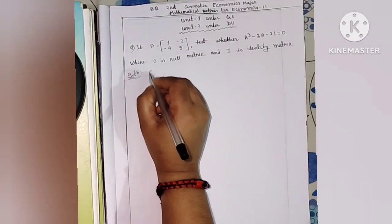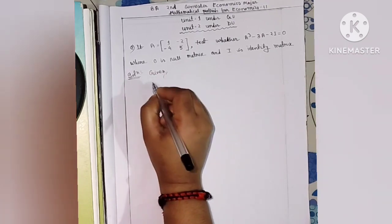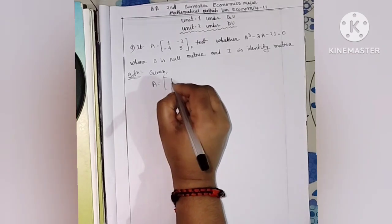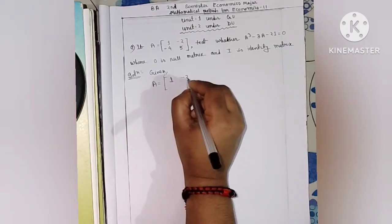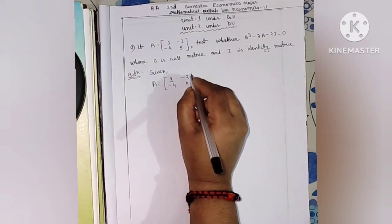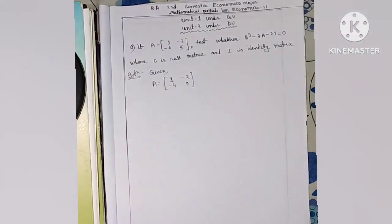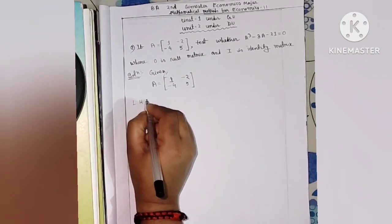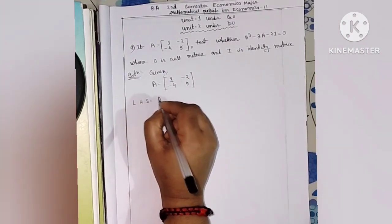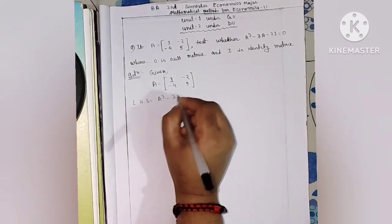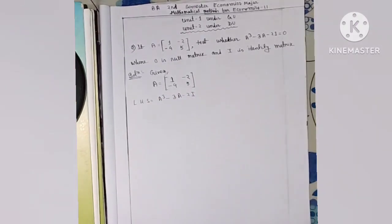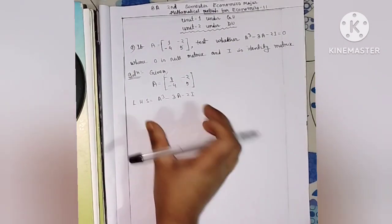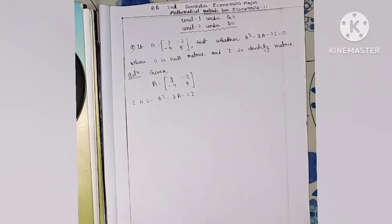First, given the matrix A, which is a 2×2 matrix with entries 1, minus 2, minus 4, and 5. The left hand side equation is A cubed minus 3A minus 2I, and we need to calculate this to see if it equals zero.